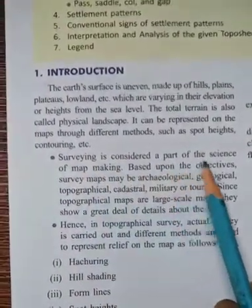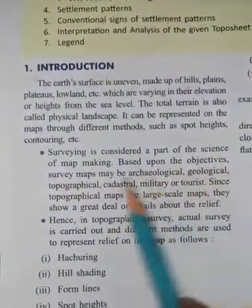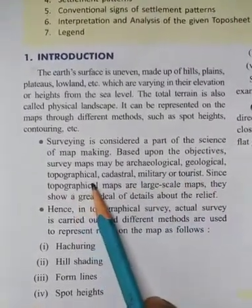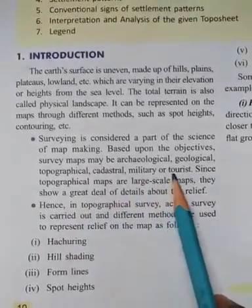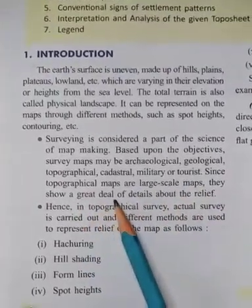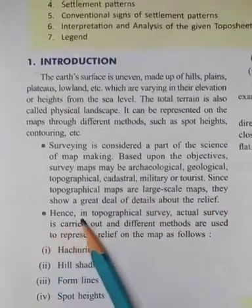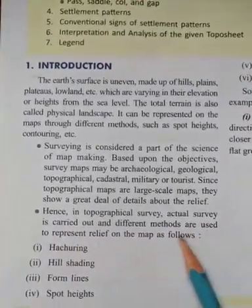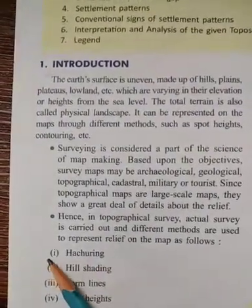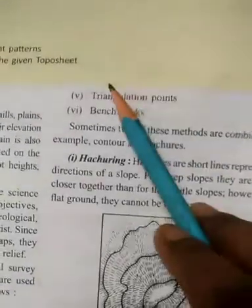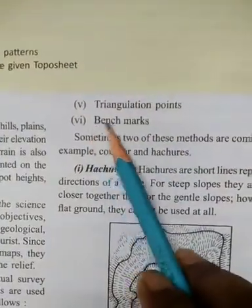Surveying is considered a part of the science of map making. Based upon their objective, survey maps may be archaeological, geological, topographical, cadastral, military, or tourist. Since topographical maps are large-scale maps, they show a great deal of detail about the relief. In topographical surveys, different methods are used to represent relief on the map: hachuring, hill shading, form lines, spot heights, triangulation point, and benchmark.